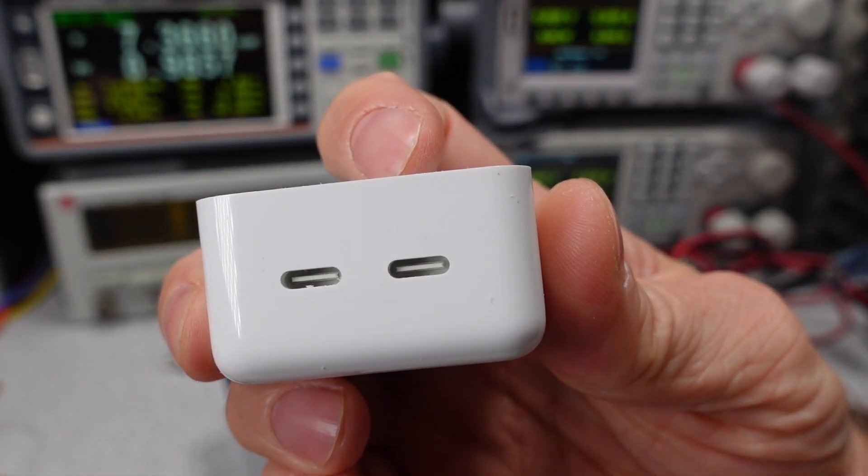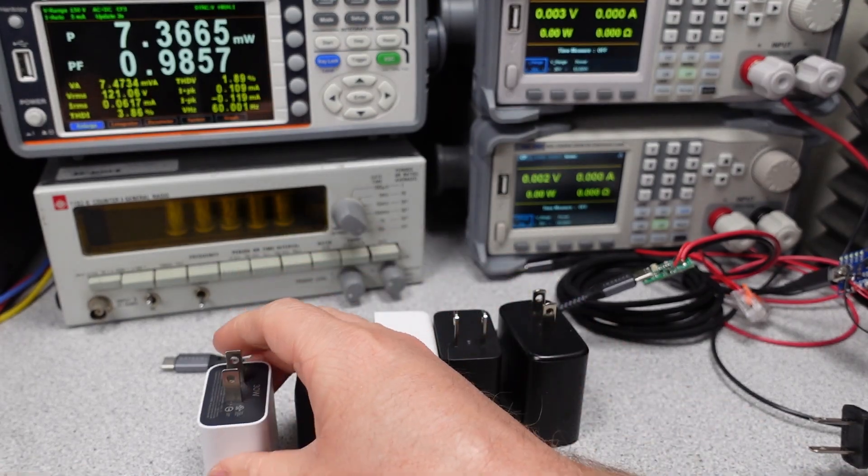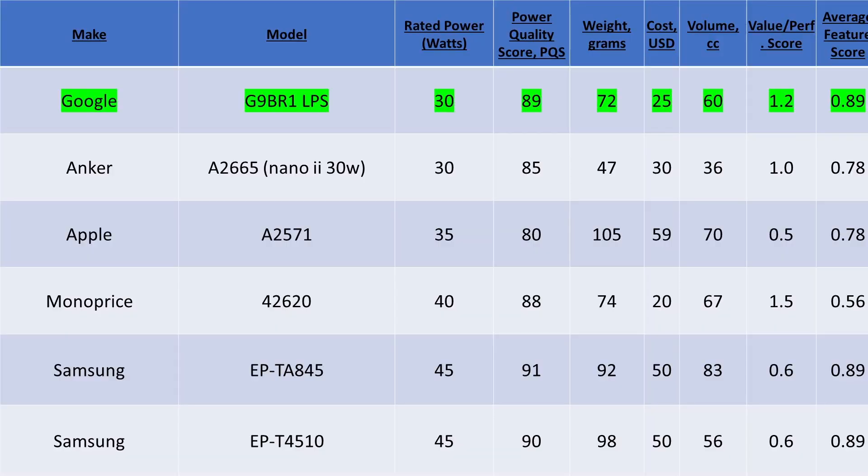If you only want one port, the Samsung 45W adapters are quite good. With lots of charge modes, these should charge anything you throw at them. The downside is that they are large comparatively to, say, the Anker Nano 2, which is also a reasonable choice and also expensive.